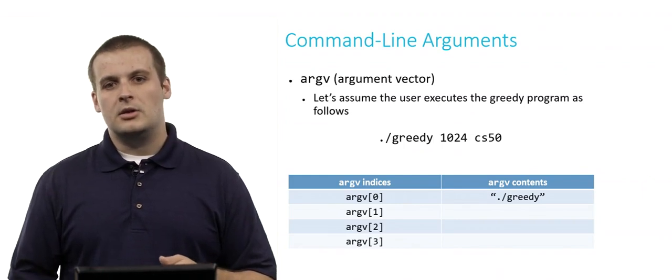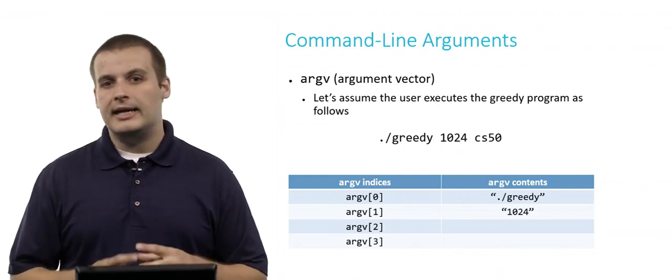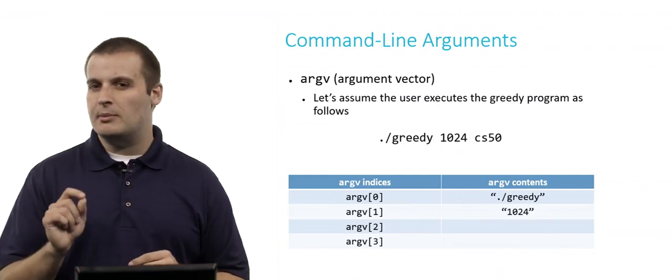In this case, argv 0 is dot slash greedy. What's argv 1? Well, it's 1024, right? It is 1024, but here's a really important distinction. Do you remember the data type of argv? It stores strings, right?